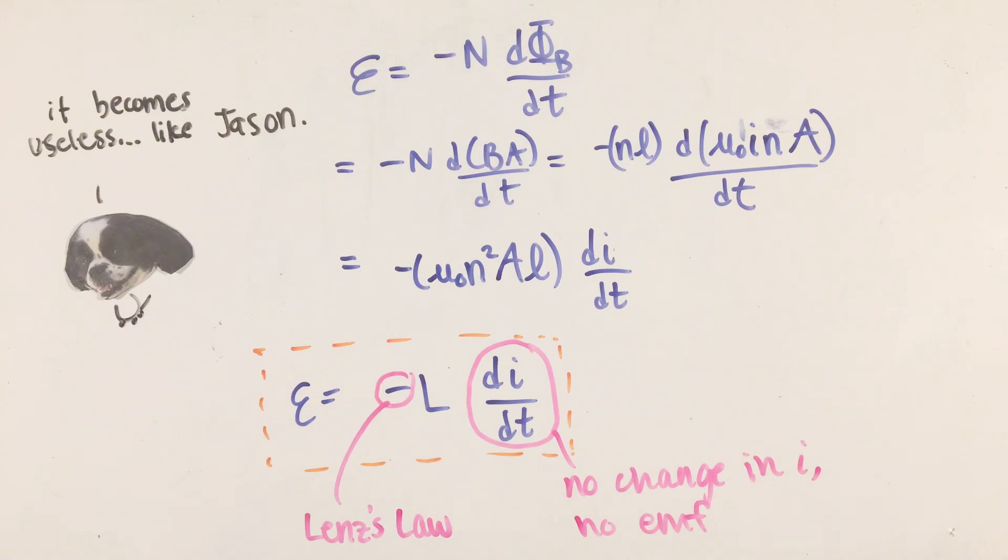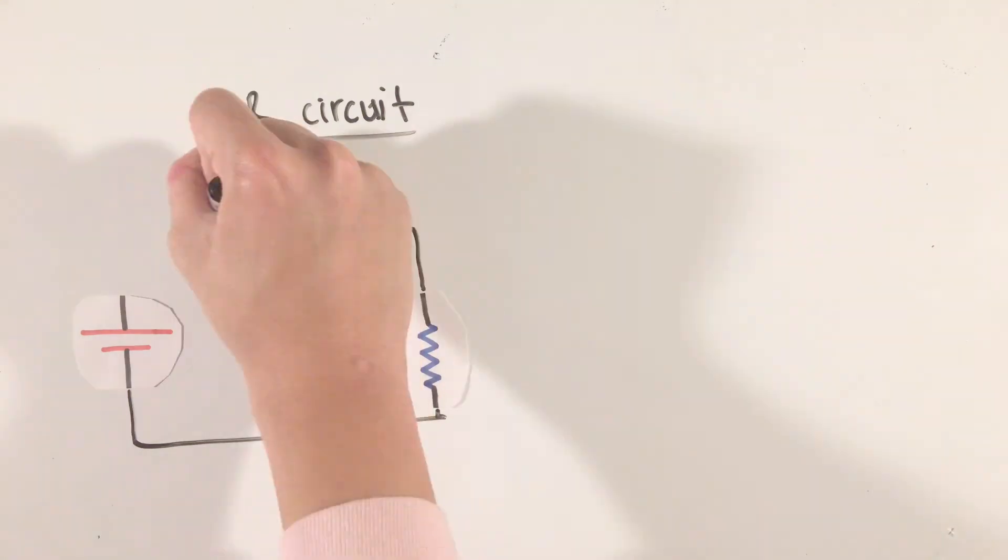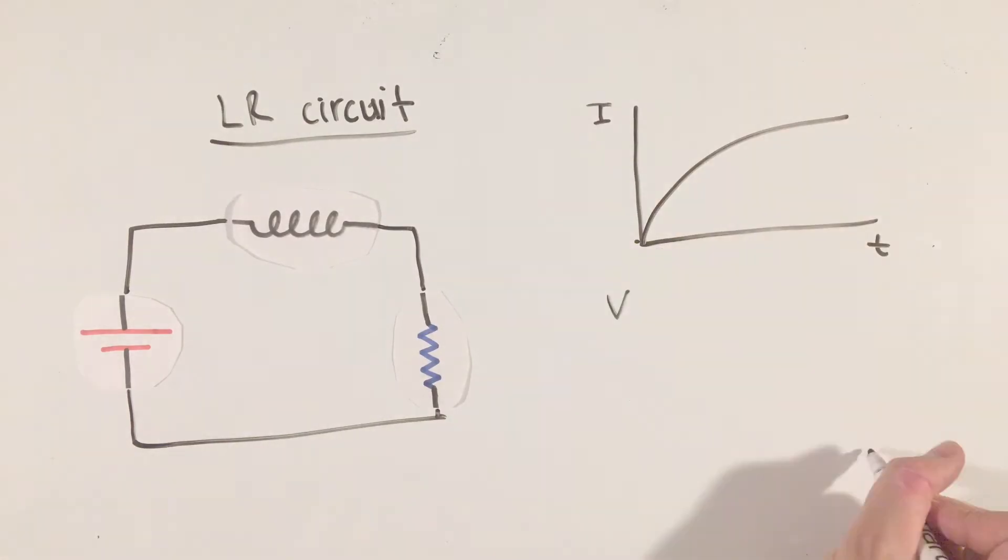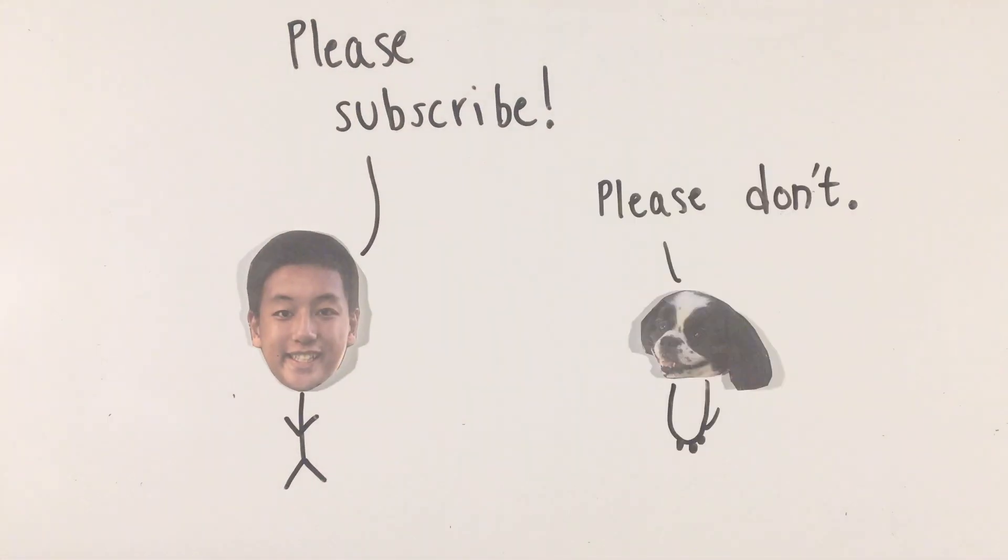The combination of all these equations with things we've learned before will eventually lead us to what's known as an LR circuit. However, that'll be the topic for a future video. For now, you can feel good that you've just finished learning about the basics of inductance and inductors.